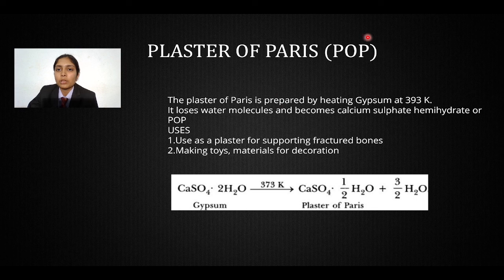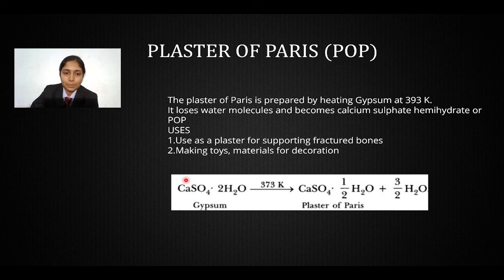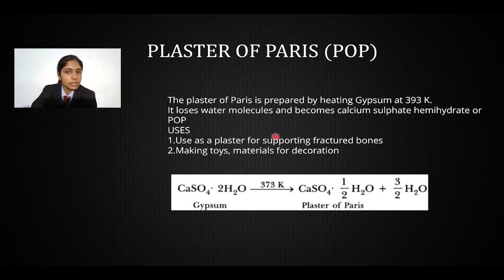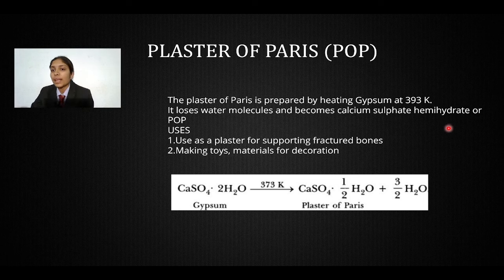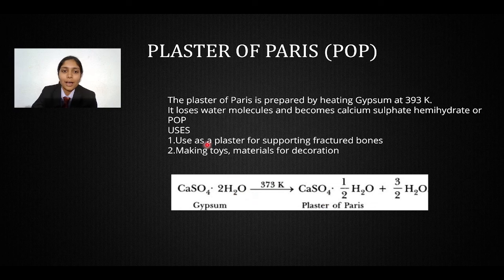Plaster of Paris is prepared by heating gypsum at 393K. Gypsum has two water molecules of crystallization. When heated, it loses water molecules and becomes CaSO₄·½H₂O — calcium sulfate hemihydrate — which is Plaster of Paris. It has only half a water molecule of crystallization. It is used as a plaster for fractured bones, making toys, and for decoration materials.